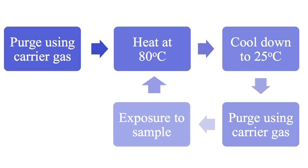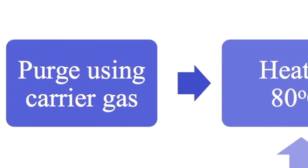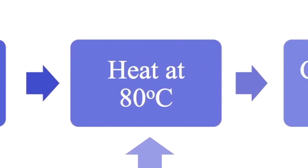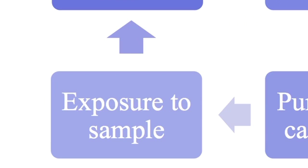In the initial phase we do the active recovery. In active recovery we first purge using carrier gas, then we heat up to 80 Celsius, then we cool and then we expose our sensor to gas samples.